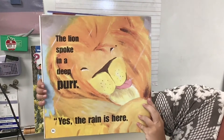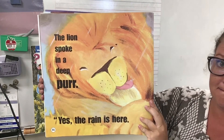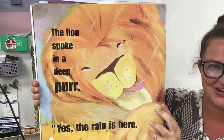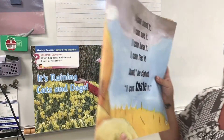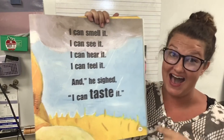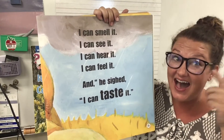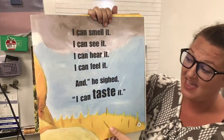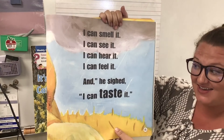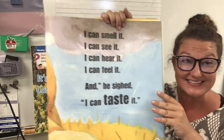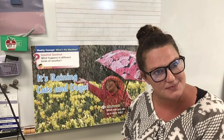The lion spoke in a deep purr. 'Yes, the rain is here. I can smell it. I can see it. I can hear it. And I can feel it. And,' he sighed, 'I can taste it.' I wonder what he means by that — how can he taste the rain?